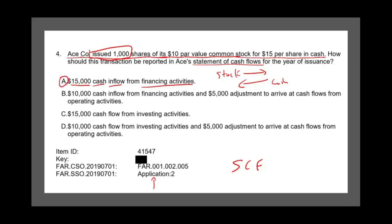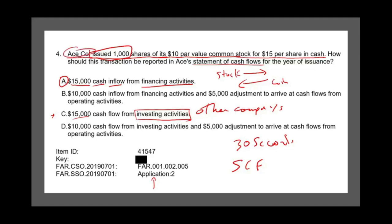A question like this should take you no more than 30 seconds. Issuing your own stock is a financing activity — if you don't answer this correctly, there's a good chance you won't pass, because the AICPA doesn't want someone who doesn't know that. Answer C looks tempting — $15,000 cash from investing activity — but that's when you sell stocks of other companies, not your own. B and C cannot be the answer because they separate the $10,000 par and the $5,000 premium.